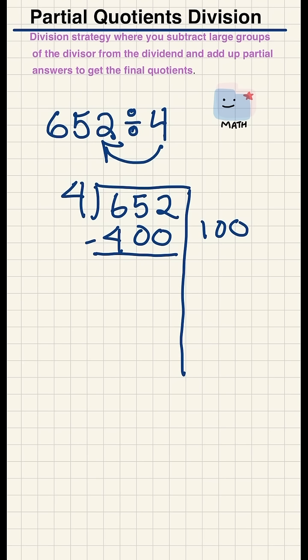So when I subtract out 400 from 652, I'm left with 252. I know 4 times 5 is 20, so 4 times 50 would give me 200. Let's subtract out 200.